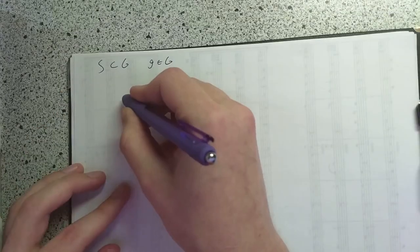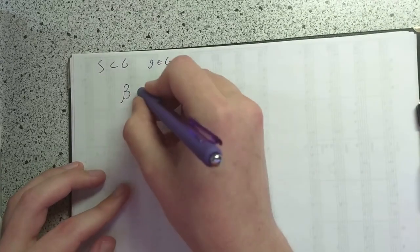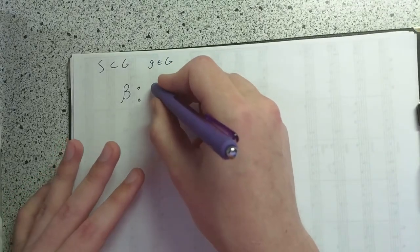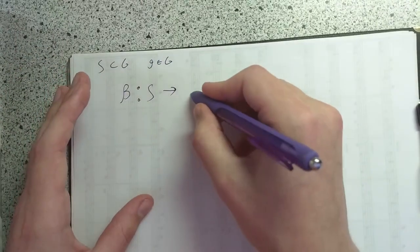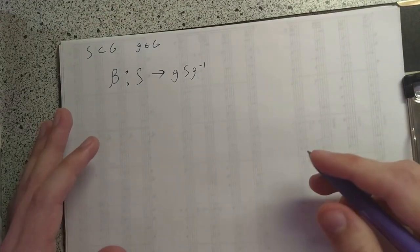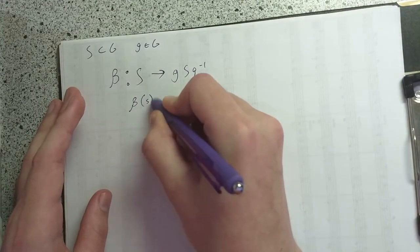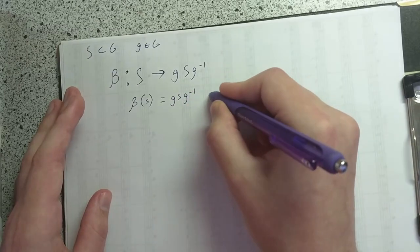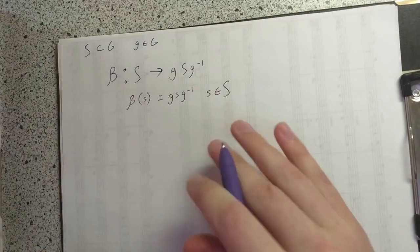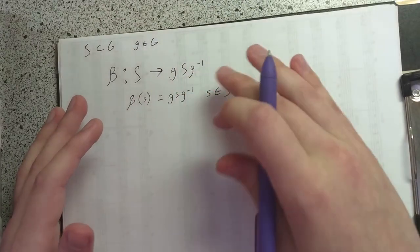Now we just have to prove that conjugation of the subgroup preserves the order of the subgroup. Since we're working with a finite group, that just means the subgroups have the same number of elements. The way to show two finite sets have the same number of elements is to show a bijection between them. I'm going to define this bijection, which I'll call beta, starting from S and sending elements to the conjugation of S. The obvious rule for beta is: beta of S equals g S g-inverse for any S inside S.